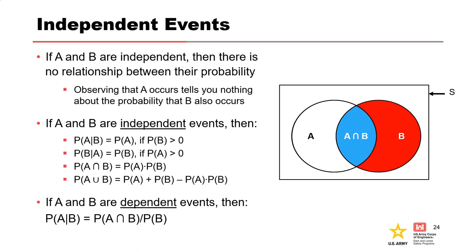Independent events have no relationship between their probabilities, and observing one event tells you nothing about the probability of another occurring. Potential failure modes are typically developed assuming independence, but this is not always a good assumption. For example, if a dam has a gated structure, failure or inoperability of the gates would impact reservoir stage, making internal erosion failure dependent on gate operability. Another example is a dam with two separate embankments that overtop simultaneously but where one is more erodible — if the more erodible embankment breaches first, the overtopping hydrograph of the other changes, making their probabilities dependent.